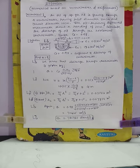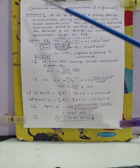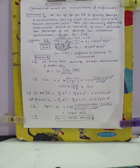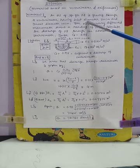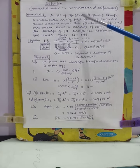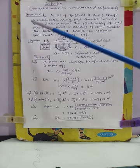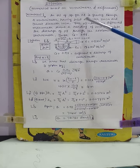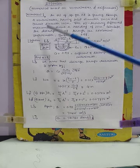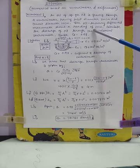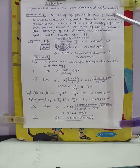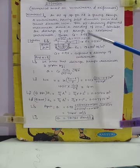Let us reduce to venturi meter flow. Here is a very interesting example: an oil of specific gravity 0.8 is flowing through a venturi meter having inlet diameter 20 centimeter and throat diameter 10 centimeter. The oil-mercury differential manometer shows a reading of 25 centimeter — that is the value of X, the difference of the two mercury columns. Calculate the discharge of oil through the horizontal venturi meter.